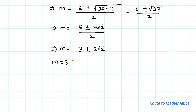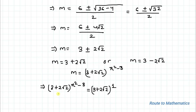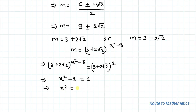So m = 3 + 2√2 or m = 3 - 2√2. For the first case, since m = (3 + 2√2)^(x² - 8), substituting m = 3 + 2√2 gives (3 + 2√2)^(x² - 8) = (3 + 2√2)^1. Since both sides have the same base, we equate the powers: x² - 8 = 1, so x² = 9, giving x = ±3.